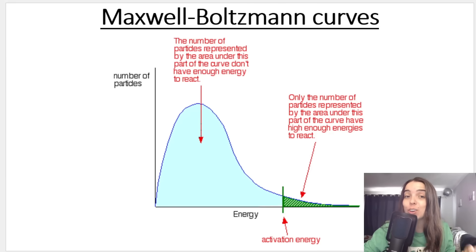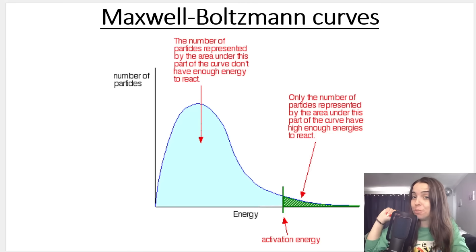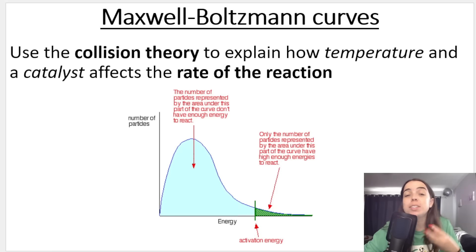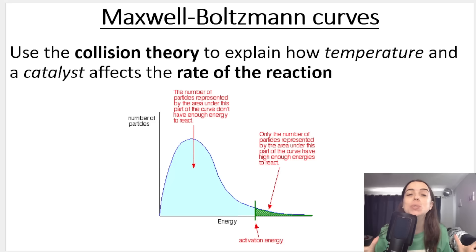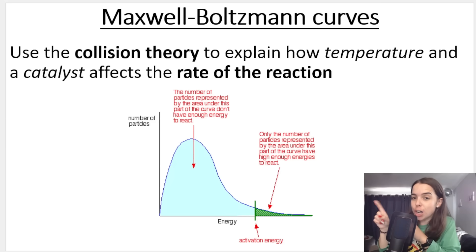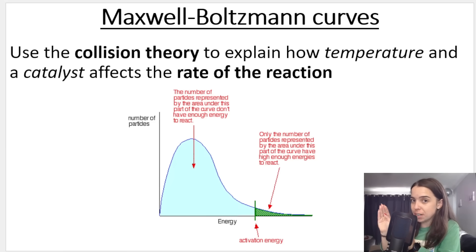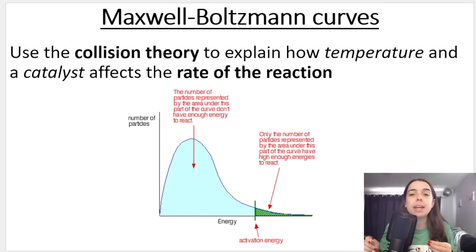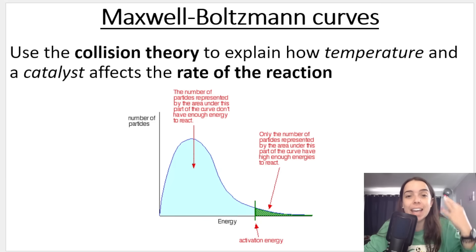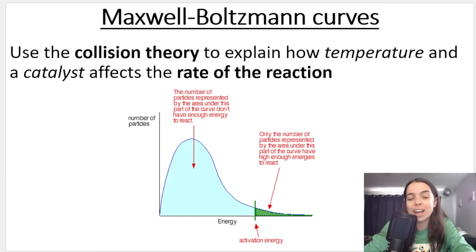In this lesson, we're going to take a look at the Maxwell-Boltzmann curve, otherwise known as the Maxwell-Boltzmann distribution curve, and we're also going to use the collision theory in conjunction with this curve. This is a visual representation to explain how temperature, concentration, and catalyst can affect the rate of a reaction.